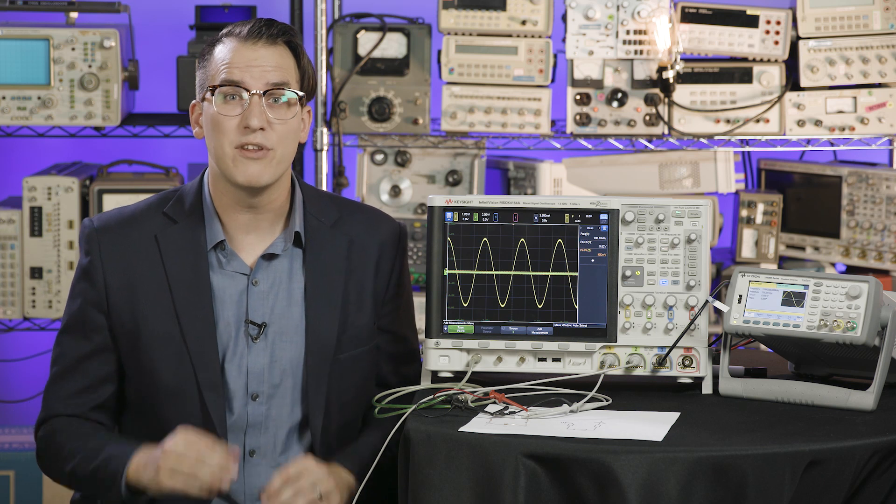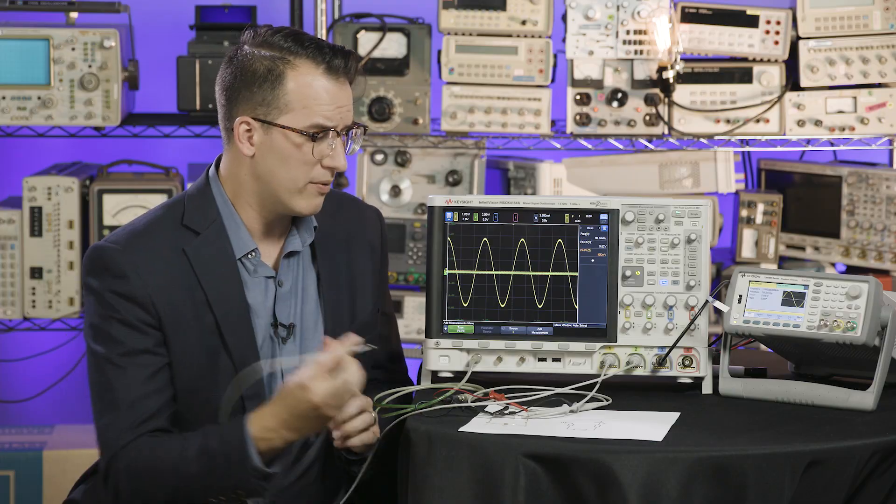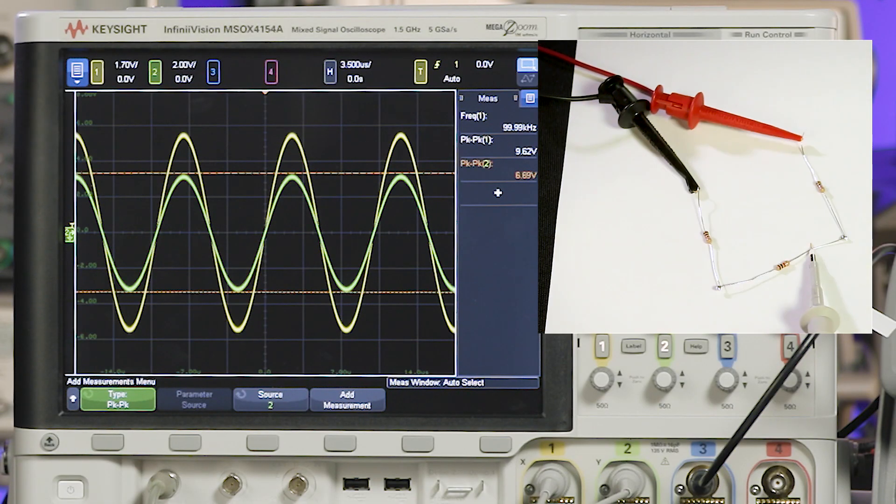We can't measure all three of those values, though, because the nodes between each of them is not connected to ground. When we try to measure them with a single-ended probe, we get 10 volts, 6.6 volts, and roughly 3.3 volts.